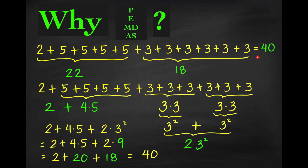To get the right answer of 40, we apply PEMDAS. First, apply exponents: 3 squared equals 9. Then multiplication: 4 times 5 is 20, and 2 times 9 is 18. Then addition: 2 plus 20 is 22, plus 18 equals 40.